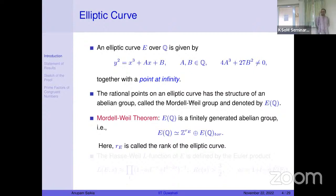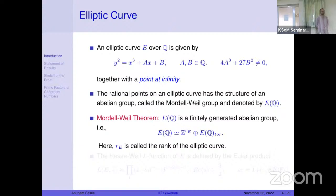By Mazur's theorem there are only 15 possibilities for the torsion part of an elliptic curve over Q. The possible torsion subgroups over other fields — for example, number fields or cyclotomic fields — depending on the degree of the extension, is an active area of research; I can mention Najman's work in particular.